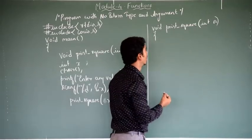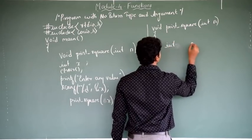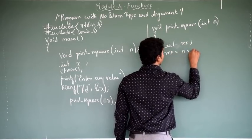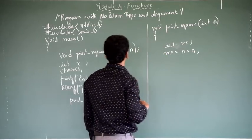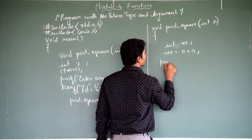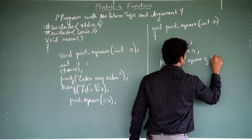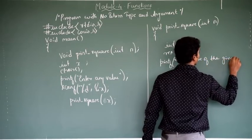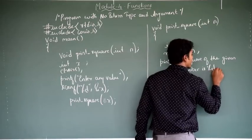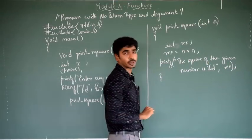Inside the function definition, I declare a variable 'result' and write the formula: result = n into n. Since this function cannot return the result back to the main program, I preferably print the result within the function definition itself using printf: 'the square of the given number is %d result'. Then I close and terminate the program.